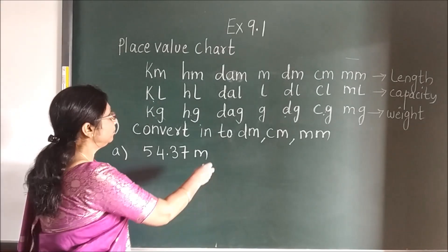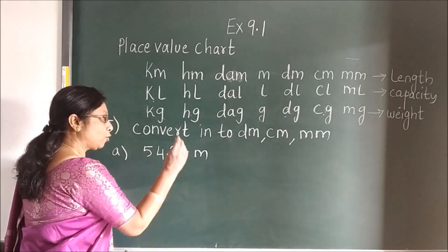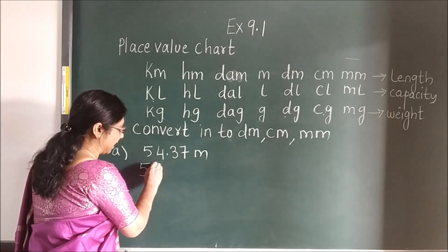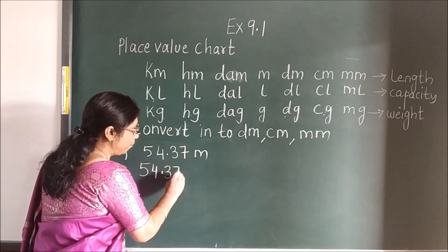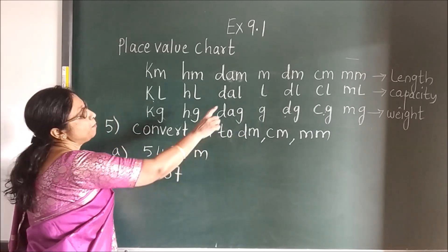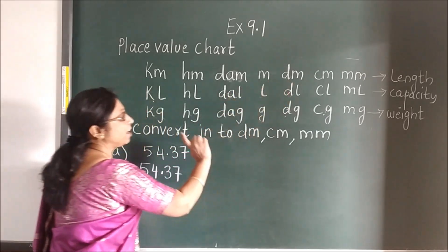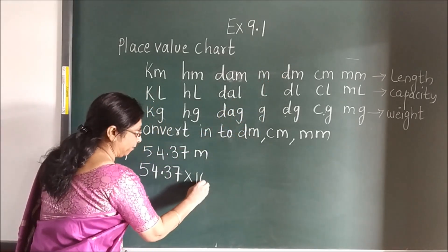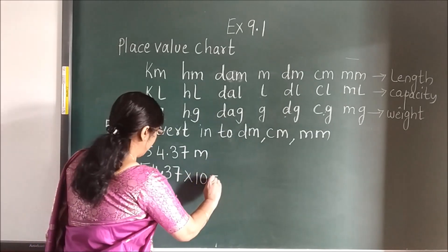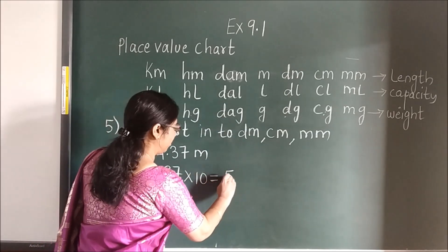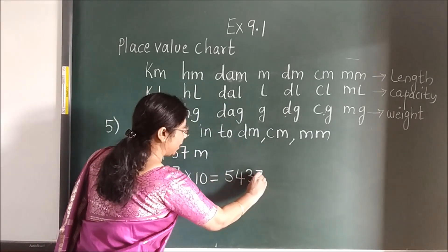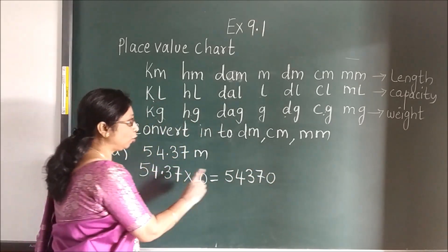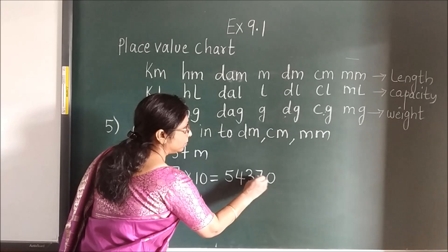Now here again there are 3 conversions. So we will do the step-based conversion, children. First you write the number as it is. M to DM — where is M? Here. And DM is here. You are moving to the right side, children. Multiply. How many times? 1. So 10. When you multiply, what do we do, children? Same number you will write without the point, add zero, and after the point how many digits? 2. So 1, 2. This is your DM.